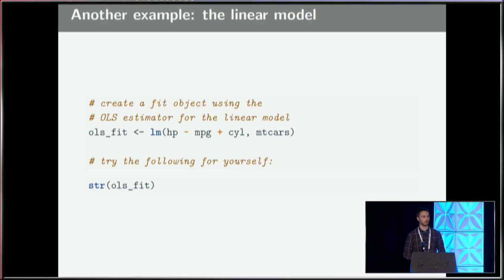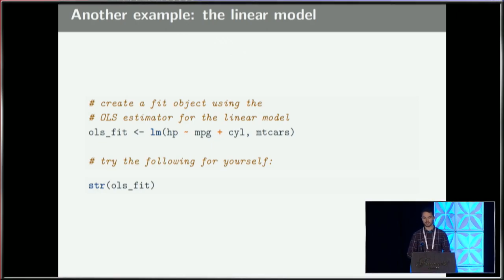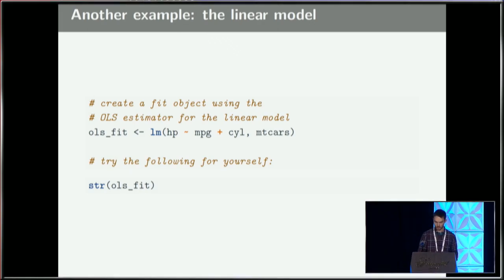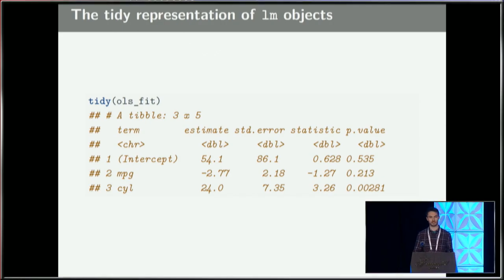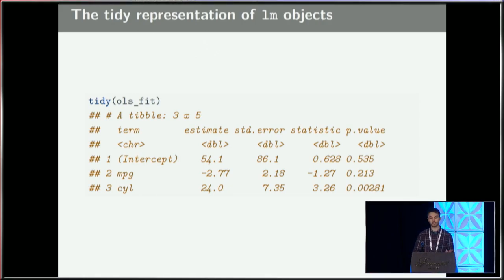Let's think about a slightly more involved model. To follow along, you only need two lines: create an OLS fit object using ordinary least squares for the linear model. The raw object is really big and complicated, but when you tidy it you get something much easier to work with — just a tibble. Here we have the term for each regression coefficient and the estimate, plus additional information specific to linear models: statistics from t-tests and associated p-values. There's also an argument to tidy that will give you confidence intervals.